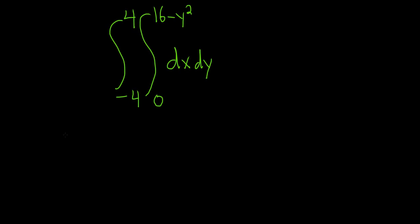Hi everyone, in this video we're going to evaluate this iterated integral. We have the integral from negative 4 to 4, and then from 0 to 16 minus y squared, of 1 times dx dy. There is an invisible 1 here, so first we have to integrate with respect to x because it says dx here.